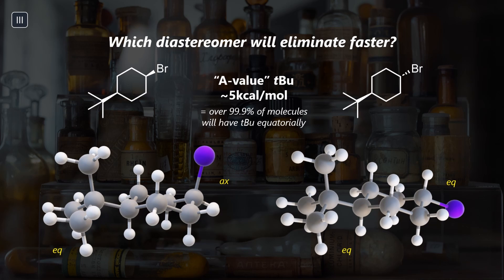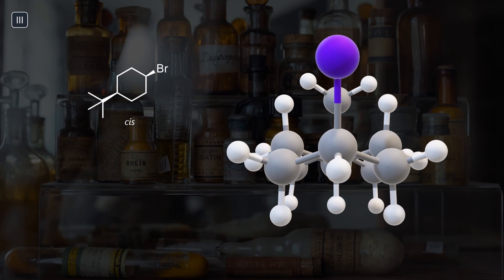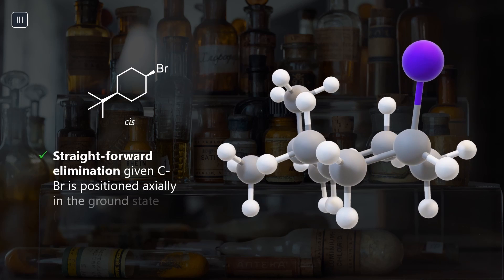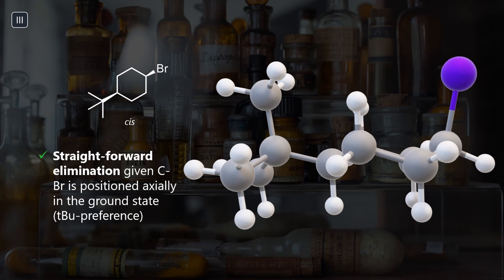The huge tert-butyl group will dictate our ground state conformation through its equatorial preference, characterized by a large A-value. Notice anything different about the isomers? If the bromide is cis, the most stable chair conformation already has the C-Br axial and thus anti to two hydrogens. We are ready to eliminate.